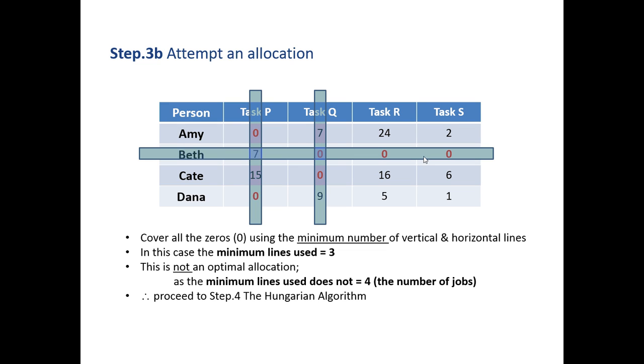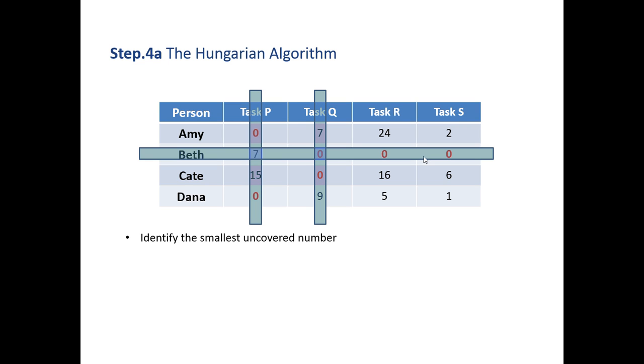So we've tried a row reduction, a column reduction, and tried the attempted allocation after both, unsuccessfully. The third step is to perform what we call the Hungarian algorithm. The Hungarian algorithm asks us to identify the smallest uncovered number, so in this case it's one. We then subtract that number from every uncovered element, so the numbers remaining that haven't got these particular lines going through them. So 24 take one, 16 take one, 5 take one, 2 take one, 6 take one, and 1 take one.